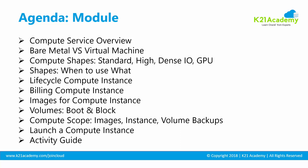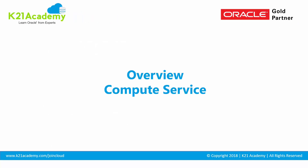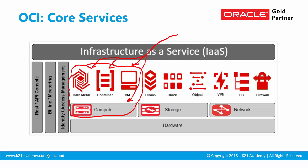Let's begin with the first topic: compute service overview, or what does an instance mean with respect to Oracle Cloud Infrastructure. In module 1 we looked at a very high level — you have hardware, on top of that you have compute, storage, network, and identity and access management comes across almost all of these.